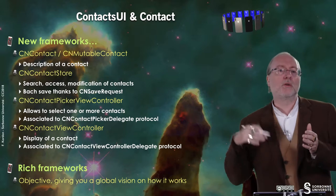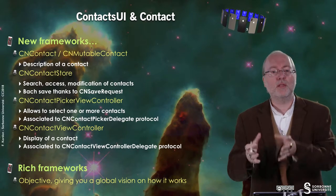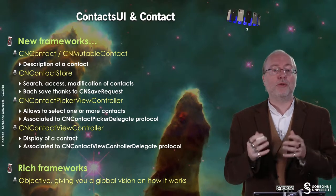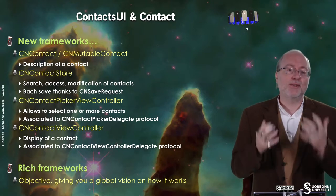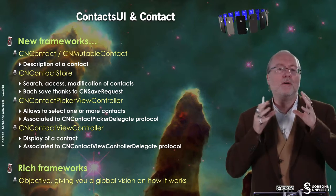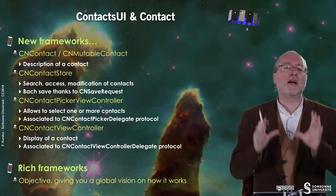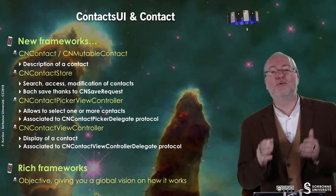The save is done in batch, remotely, in a separate thread, thanks to CNSaveRequest. So you create a request and then you can store the new contact. Then you have a CNContactPickerViewController that allows you to pick one or more contacts from the list of contacts in the device, and that is associated to a protocol called CNContactPickerDelegate. You also have a CNContactViewController that handles the standard display of a contact, associated to a protocol called CNContactViewControllerDelegate.